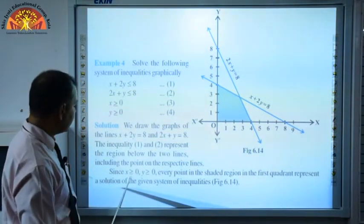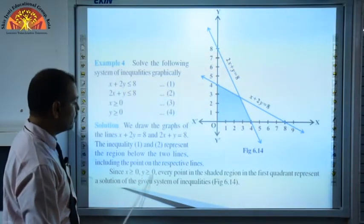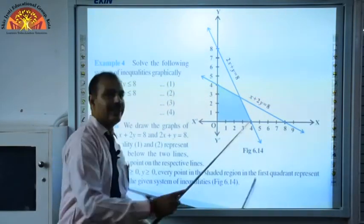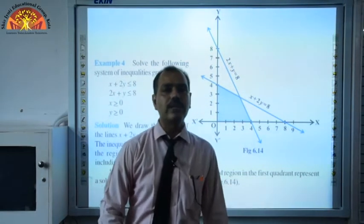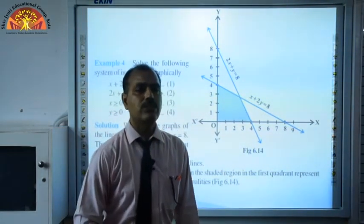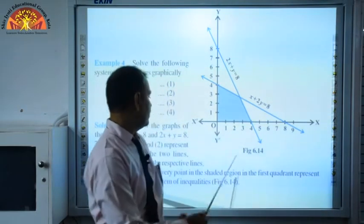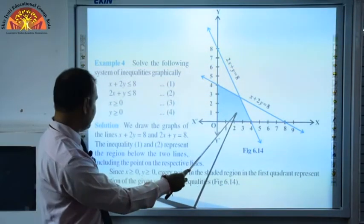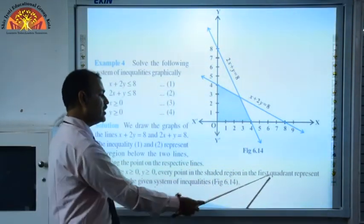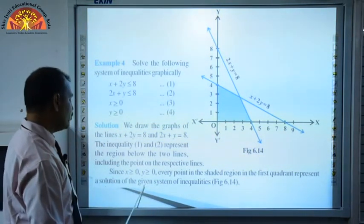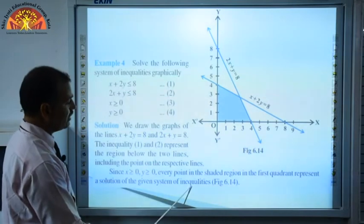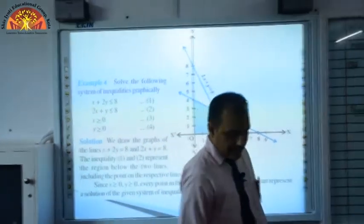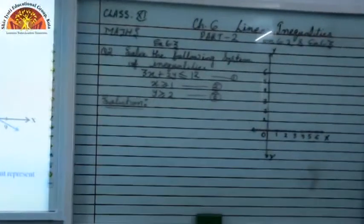Since x ≥ 0 and y ≥ 0, every point in the shaded region lies in the first quadrant. Therefore the shaded region in the first quadrant represents the solution of the given system of inequalities.